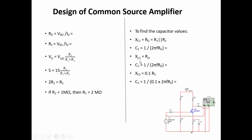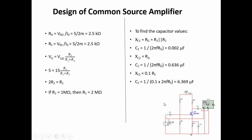Similarly, XC2 equals Rg, so C2 is found as 1 divided by (2π × f × Rg). The source bypass capacitive reactance XCs equals 0.1 times Rg, so Cs is calculated as 1 divided by (0.1 × 2π × f × Rg). These are the design calculations for the common source amplifier, giving us the drain resistance, source resistance, coupling capacitors C1, C2, and Cs.